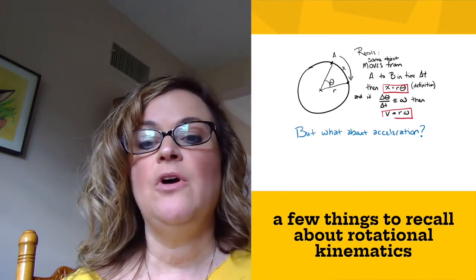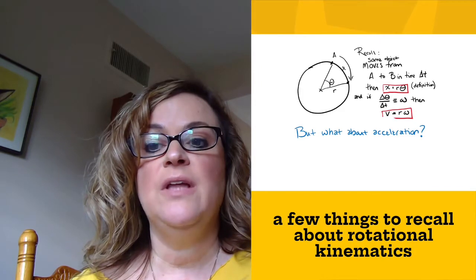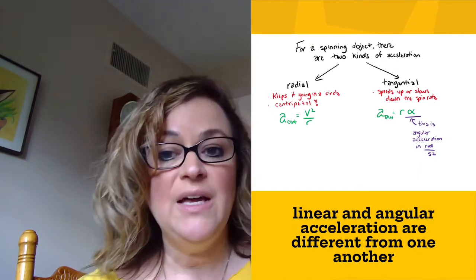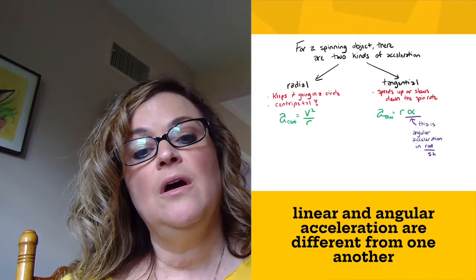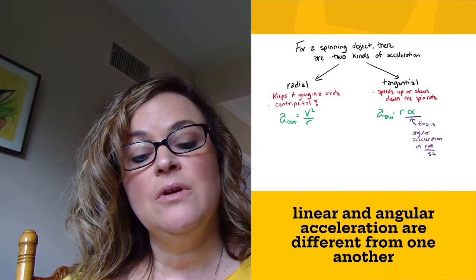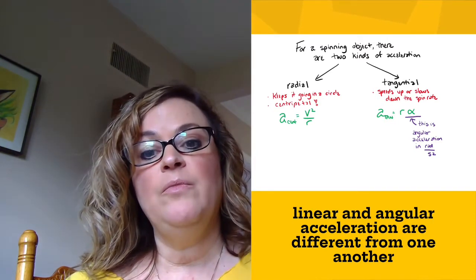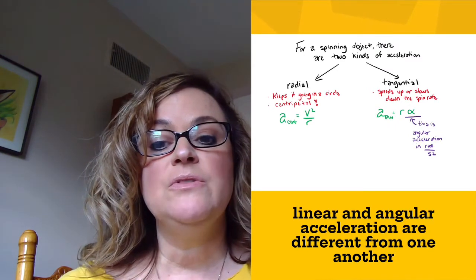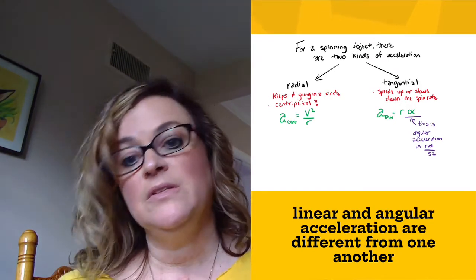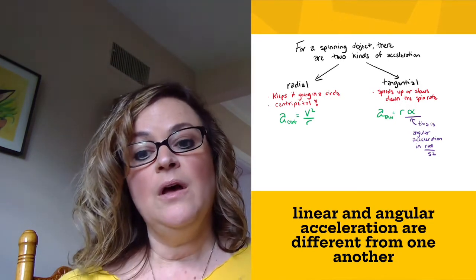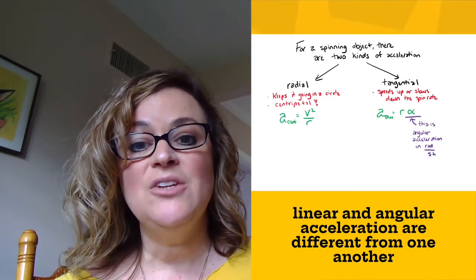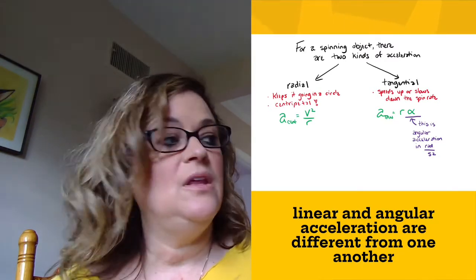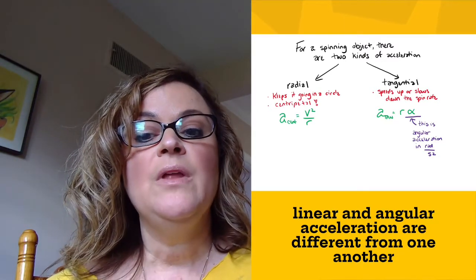But what about acceleration? We didn't really talk about that very much last time. So now I want to focus on acceleration for a spinning object. And there are two kinds of linear acceleration that we can think about that are related to the angular acceleration. So first of all, we've been talking about the centripetal acceleration of an object. That is also sometimes known as the radial acceleration because it's along the radius of the circle. You'll remember centripetal acceleration points into the center of the circle, and that is what keeps an object curving on a circular path. We can calculate that by doing v squared over r.